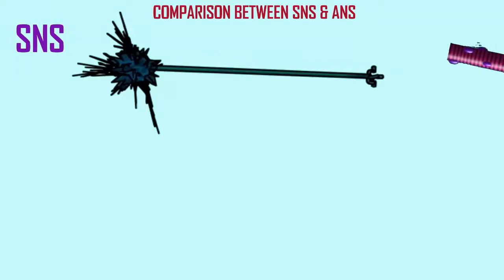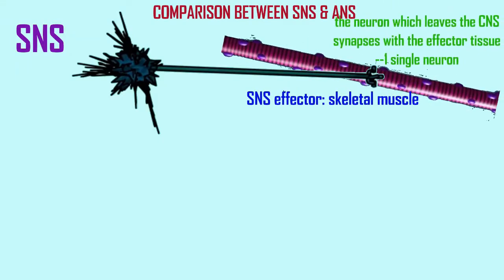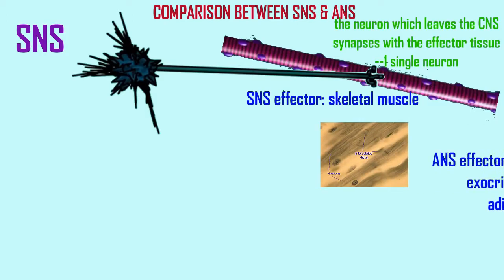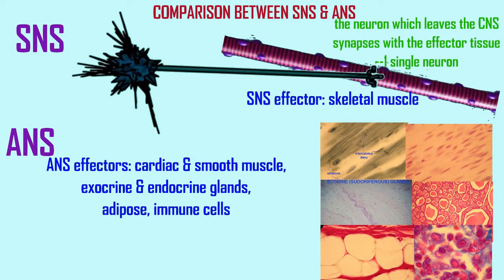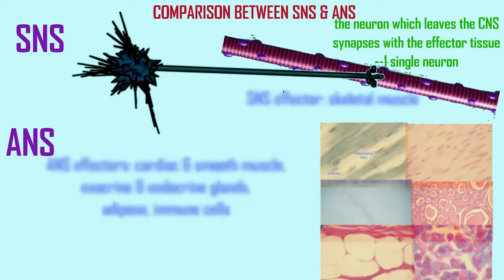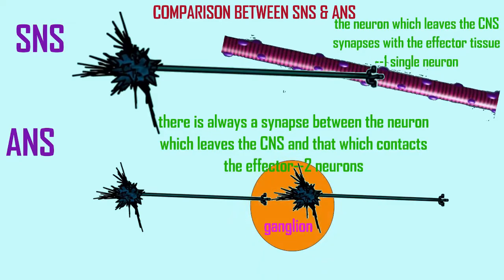Unlike the somatic nervous system, in the autonomic nervous system, the neuron whose axon leaves the central nervous system does not arrive at the effector organ. Instead, it synapses with a postganglionic neuron within a ganglion, and it is the second neuron whose axon reaches the effector.